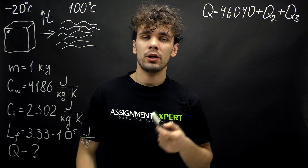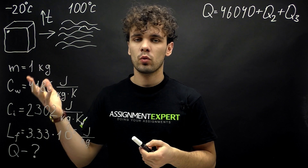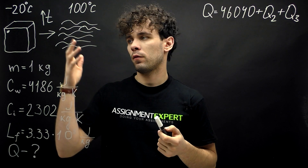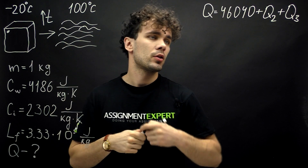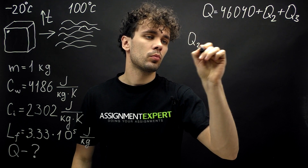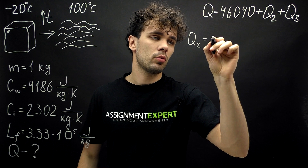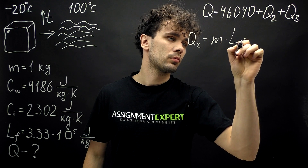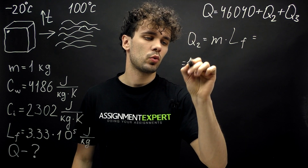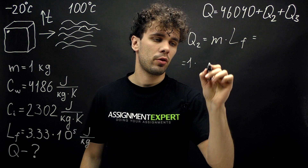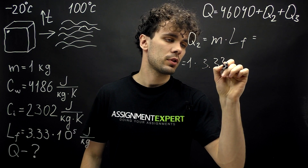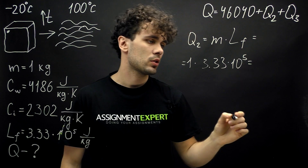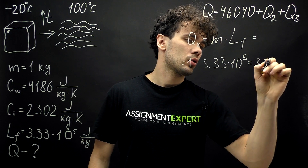We found the amount of heat needed to change the temperature of the ice cube from negative 20 to zero degrees Celsius. Now let's find the amount of heat needed to change the state of our substance from ice to water. Q2 equals the mass of the ice cube times the latent heat of fusion. This is equal to 1 times 3.33 times 10 to the fifth power, which gives us 330,000 Joules.